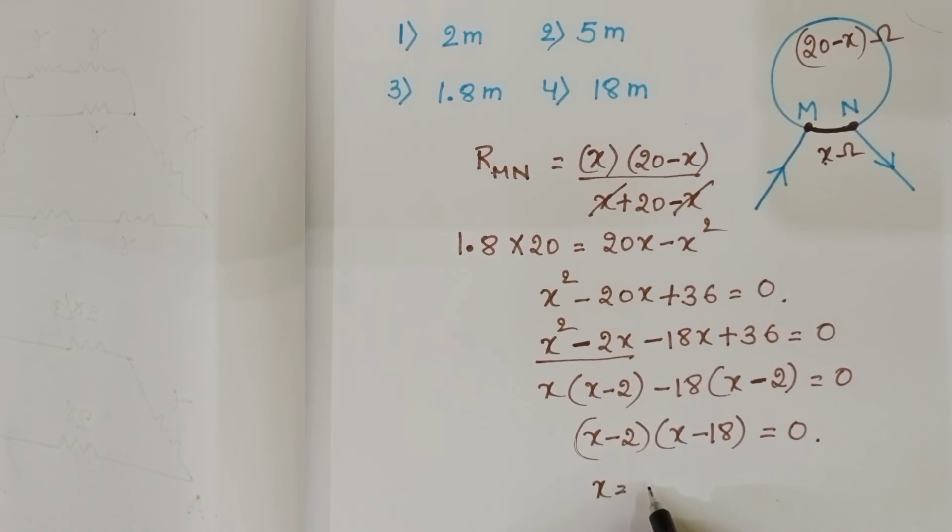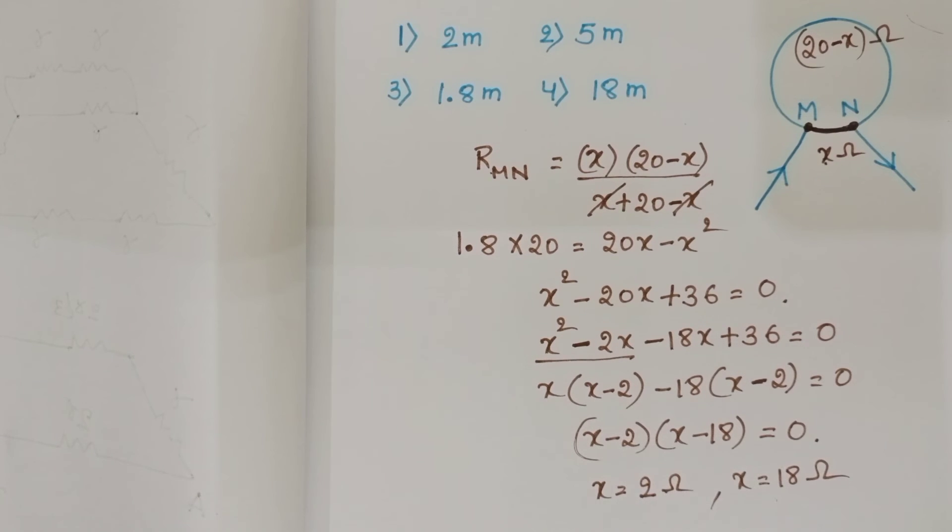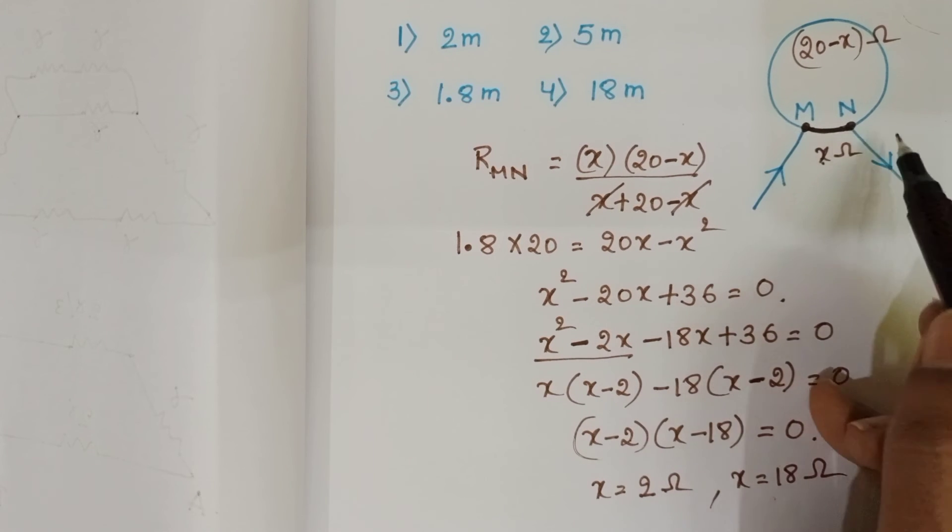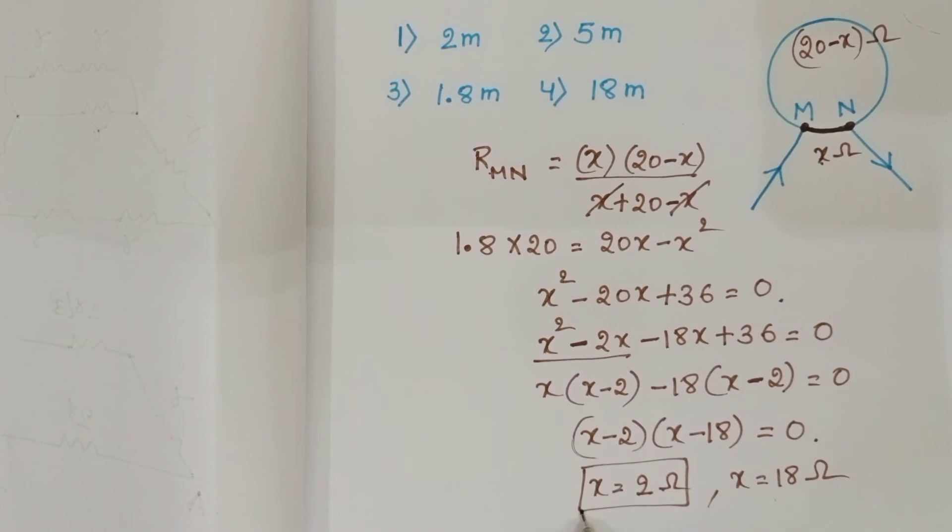Then X equals first value is 2 ohm, and the second value is X equals 18 ohm. This resistor is the shorter resistor, so the answer is 2 ohm.